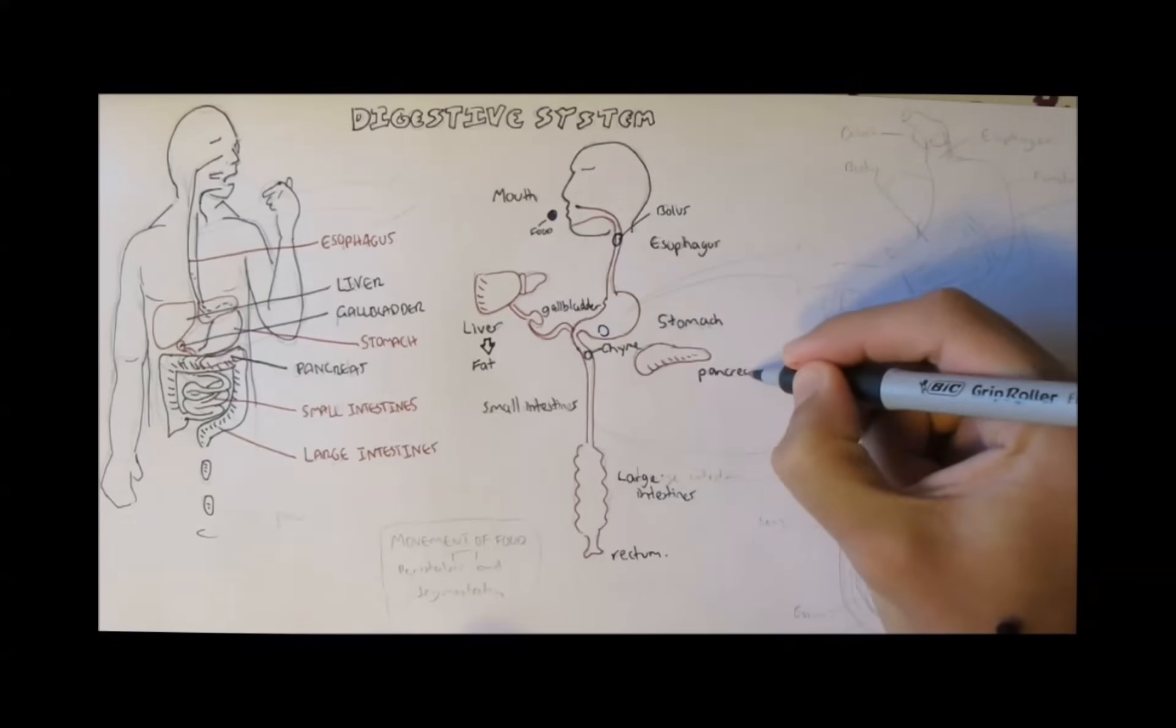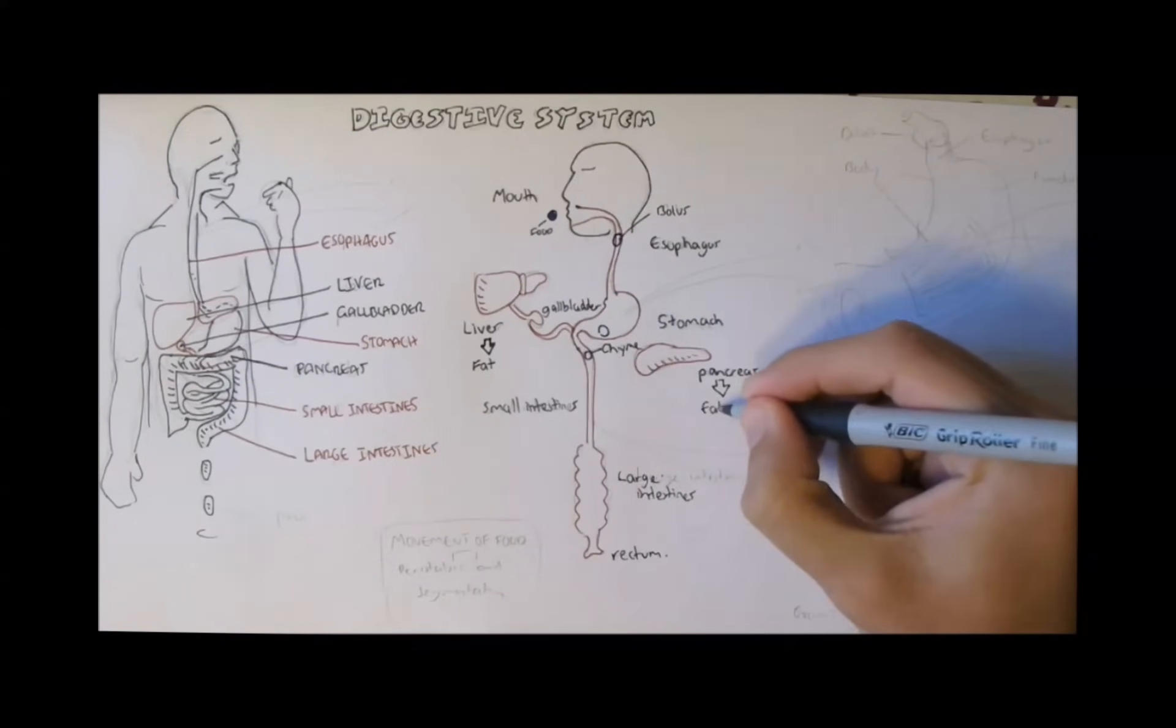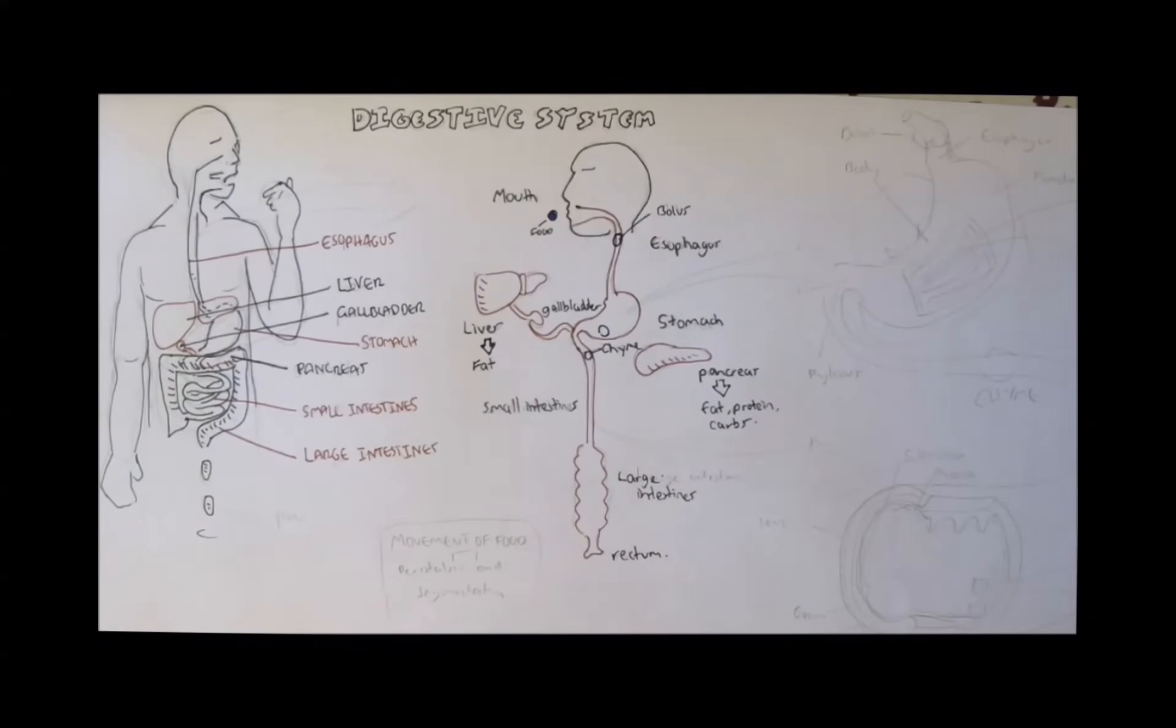Now the pancreas is another really important organ in the digestive system, I would say the most important perhaps, because it secretes enzymes that digest all macromolecules: lipids, carbs, and amino acids.